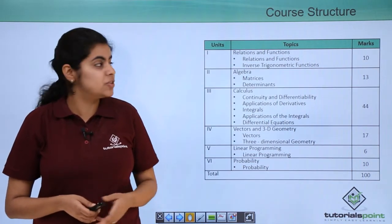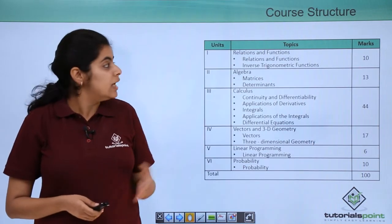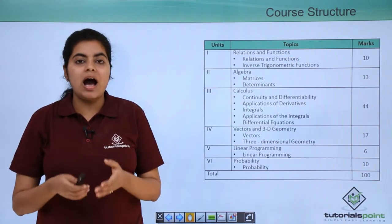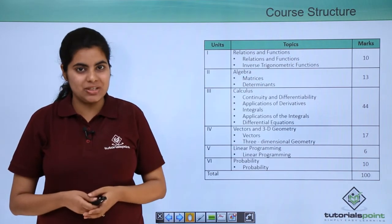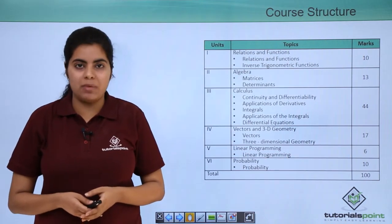The first chapter is relations and functions, and the second chapter is inverse trigonometric functions. Both these chapters are covered under the same first unit. This unit has an overall weightage of 10 marks.